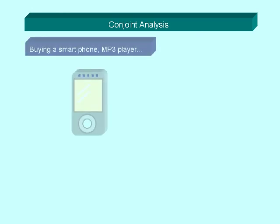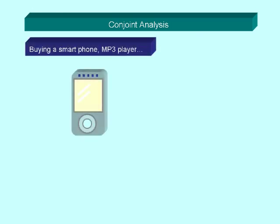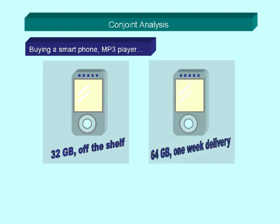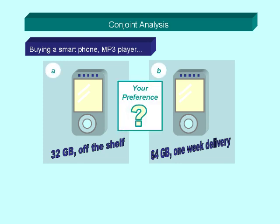Let's assume you go to a shop to buy a smartphone or MP3 player. The salesperson tells you you can either get the model with 32 gigabytes off the shelf, or you get a model with 64 gigabytes but then you have to wait one week for delivery. Now the question is, what is your preference?